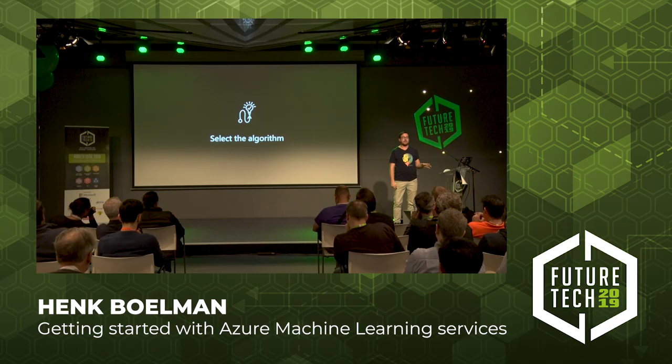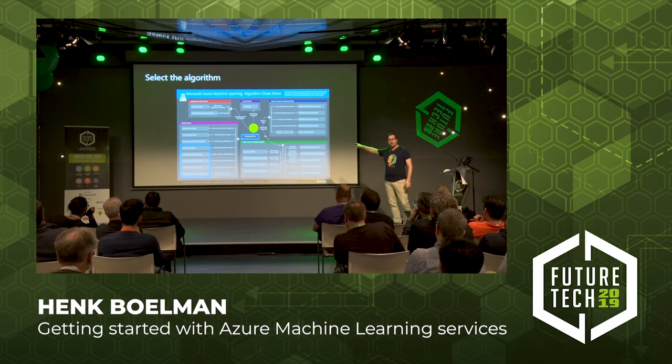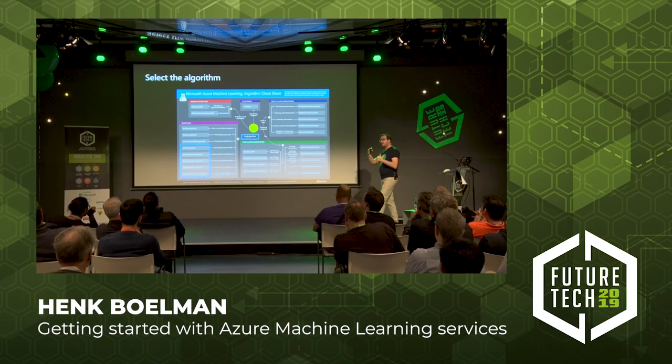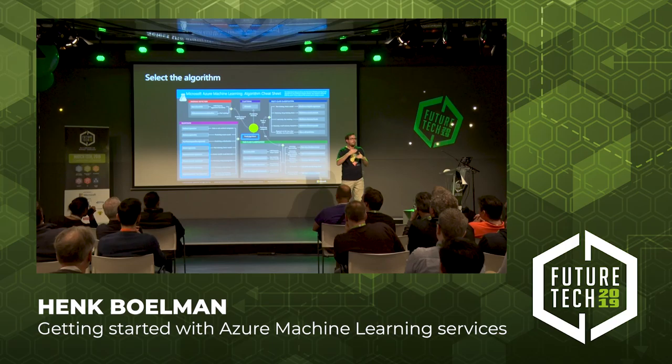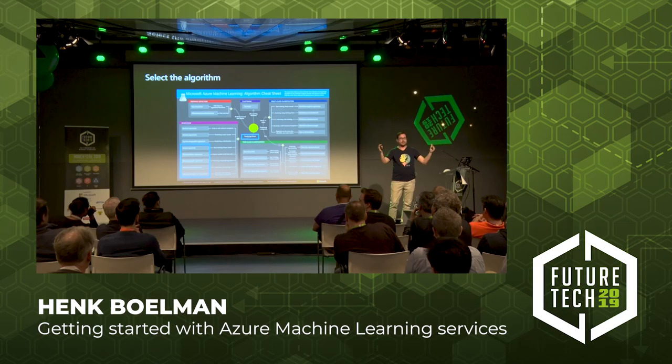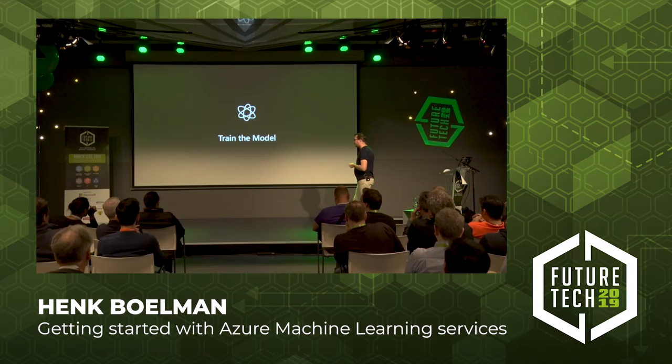When you're done with data prep, you can select an algorithm. Luckily, there are lots of cheat sheets on the internet. You just follow the arrows and you'll come to five algorithms that might solve the problem. And you don't have to pick just one — pick all five and make them compete to see which algorithm actually performs the best.